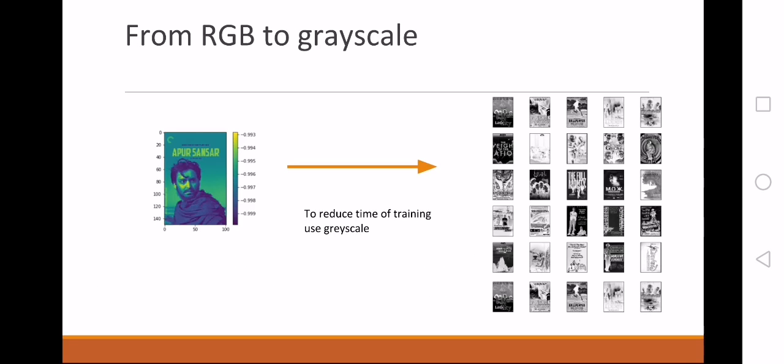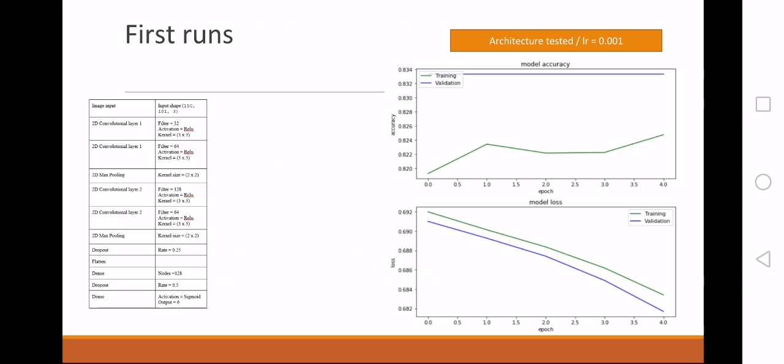We also used grayscale images to reduce the time complexity. You can see on the left side the neural network architecture that we used. We are using two dropout layers, and you can see that the results are not very good. The validation accuracy is higher than the training.